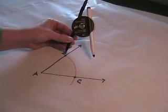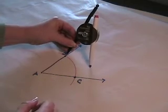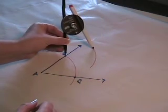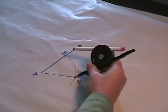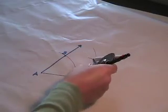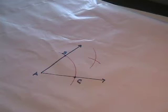Put the compass point on point B and draw an arc. With the same compass setting, draw an arc using point C. Be sure the arcs intersect.